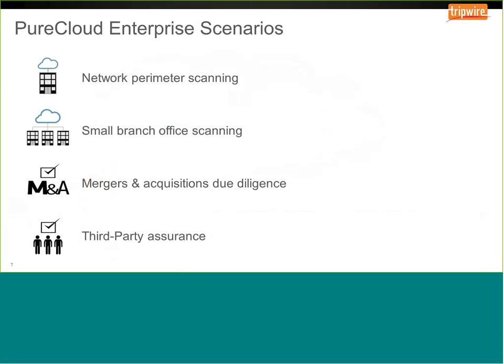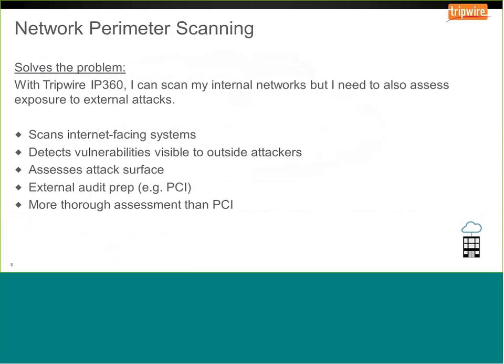For network perimeter scanning, Pure Cloud can scan your internet-facing systems and detect any vulnerabilities visible to outside attackers, including web application vulnerabilities. You can assess the attack surface and receive a report of what ports and applications are running on those devices. There's no need to deploy any connector or appliance — all scanning is performed from Tripwire's secure data center. This can also be used for audit preparation for PCI.